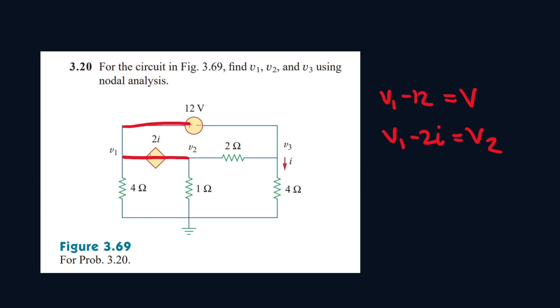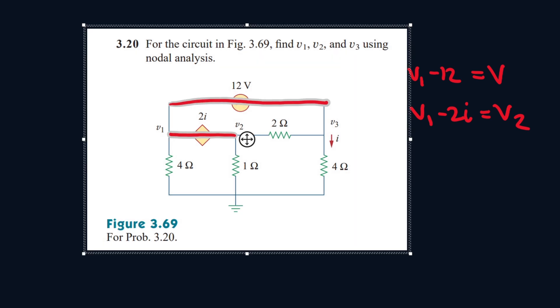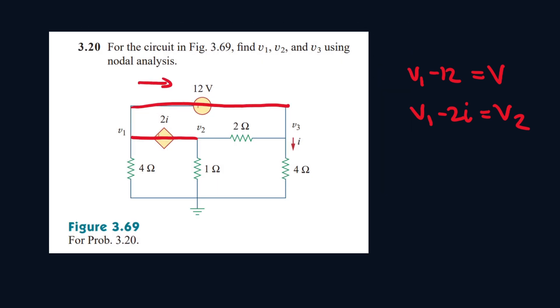Now let's write direction and treat this as one mesh and, sorry, one node, and same with this one. So let's have i1 traveling in this direction, i2 traveling in this direction, i3 traveling in this direction, i4 traveling in this direction, and i5 traveling in this direction. Since these two are one whole node, anything entering or leaving this node is equal to anything entering or leaving this node.